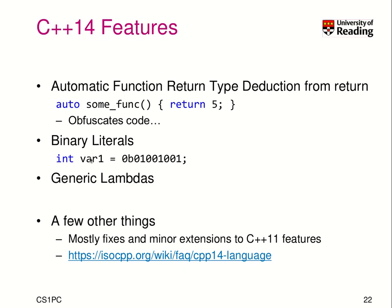Now talking about C++14 — we can now deduce the return type of a function. We can create a function some_func and declare the return type as auto, meaning the compiler infers the return type. For example, if we return 5, the compiler knows this is an integer expression, so the type will be integer. Personally, I find this obfuscates code meaning, but it can be helpful for support functions or lambda functions.